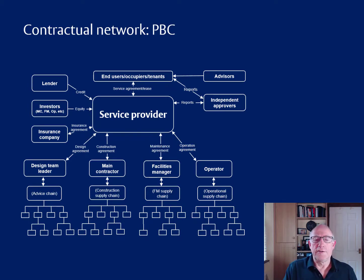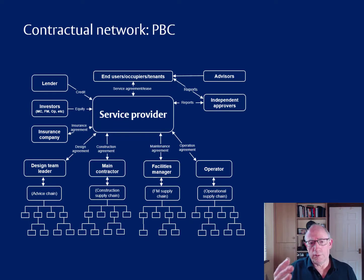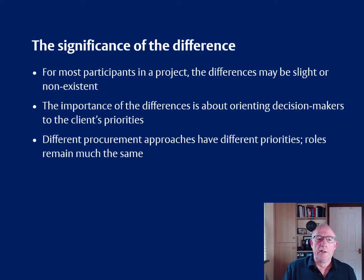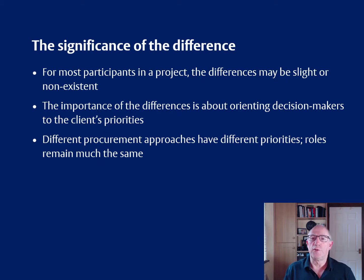Finally, in performance-based contracting this is an identical graphic to the PFI graphic. What we see here is that the roles don't change very much and the relationships don't change very much. This is a simplified map of the relationships, because it only shows a handful of boxes in each chain — in reality there are possibly several hundred trade contractors in the construction supply chain, many more contracts than are shown here. This graphic is complex enough, but it's a simplified representation.